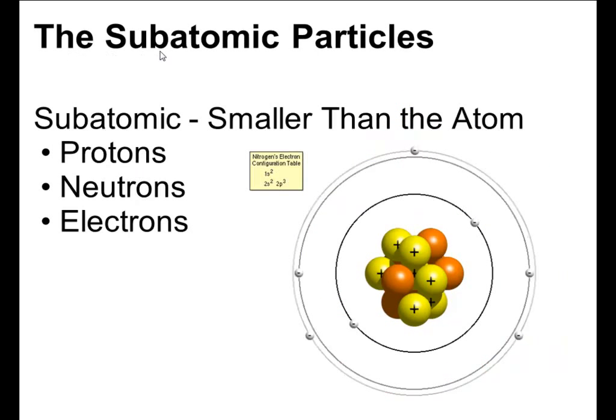We use the word subatomic to describe parts of the atom that are smaller, or sub, subatomic, particles smaller than the atom. The three subatomic particles we'll be discussing today are the protons, the neutrons, and the electrons.